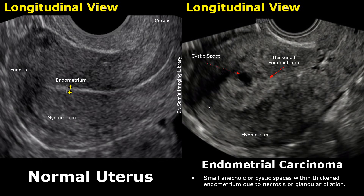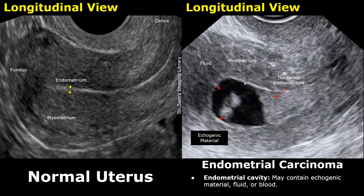In some cases, you may find anechoic cystic areas within the thickened endometrium due to necrosis or glandular dilation. You may also find a collection of anechoic fluid with echogenic material. This is the thickened endometrium, and this is the anechoic fluid with echogenic areas, which can be fluid or blood.